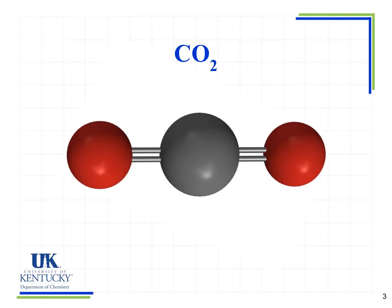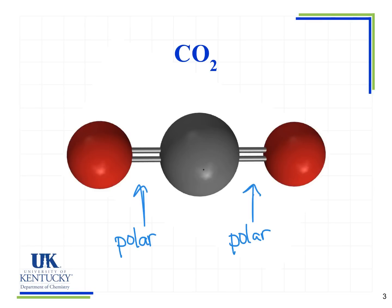Our first example is CO2. We have two double bonds with a carbon in the middle and an oxygen on each end. Looking at the carbon-oxygen bond, I know there's a difference in electronegativity, so this is a polar covalent bond. The other carbon-oxygen bond on the other side is also a polar covalent bond. Because oxygen is more electronegative than carbon, I label each oxygen with a partial negative and the carbon with a partial positive.